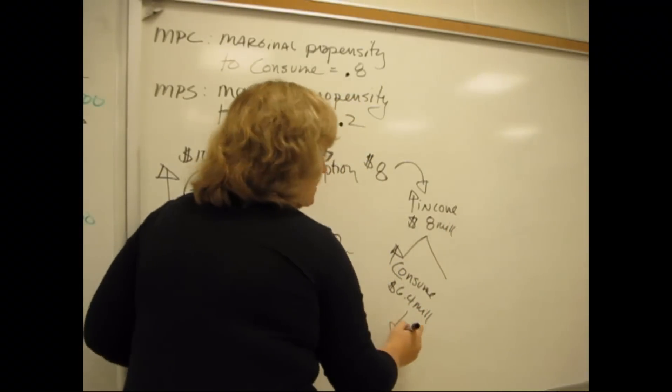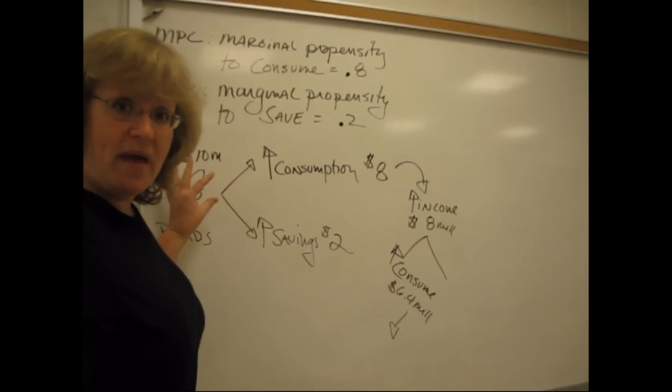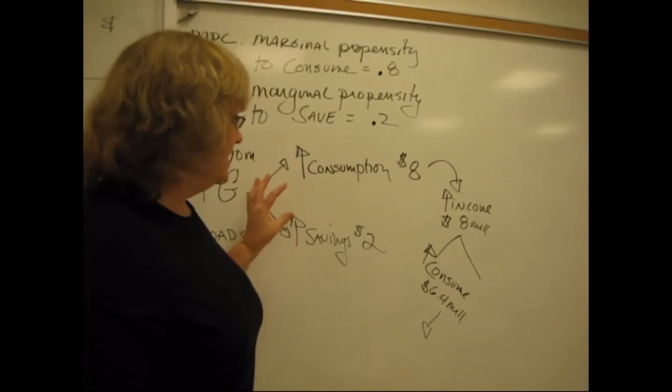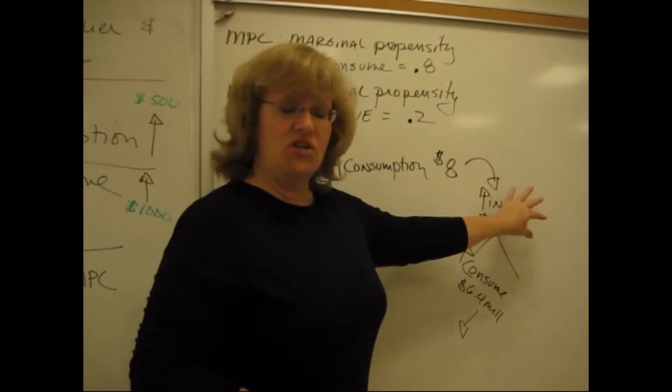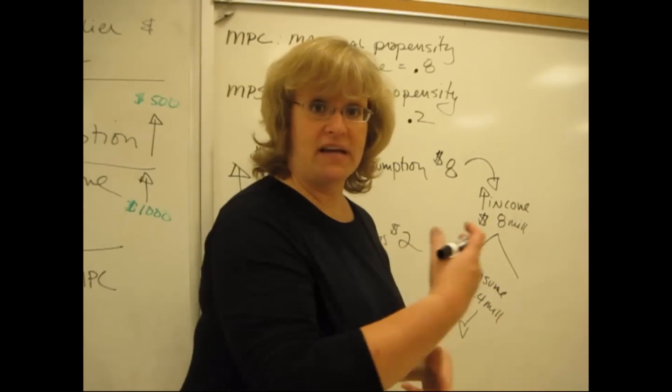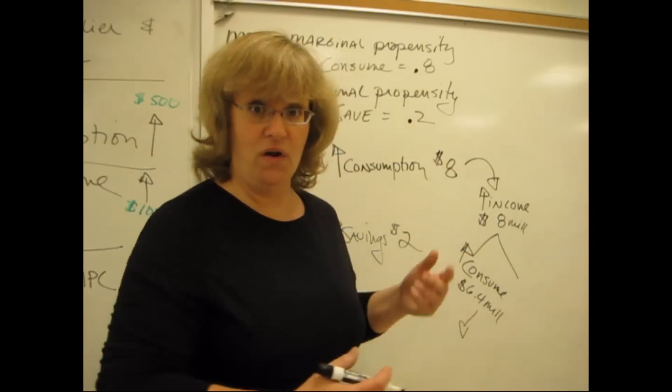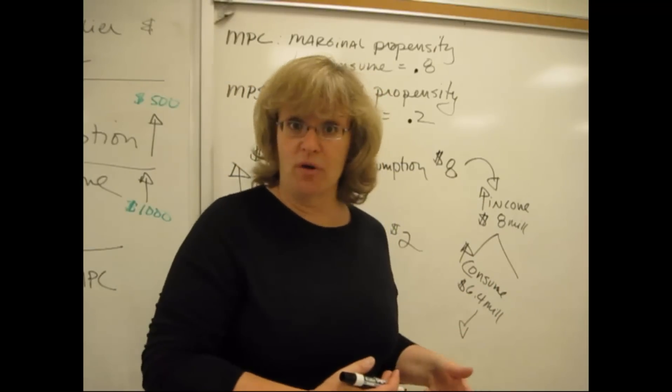And we can continue on and on and on. That original 10 million dollars of spending that the government did, turned into income for the road workers, and they spent some of it. That spending turns into income for someone else. They spent some of it, and the ripple effects keep going on and on and on. The multiplier helps us add up all those ripple effects.